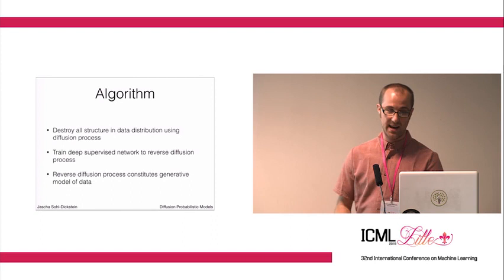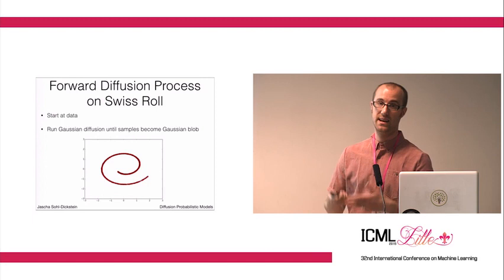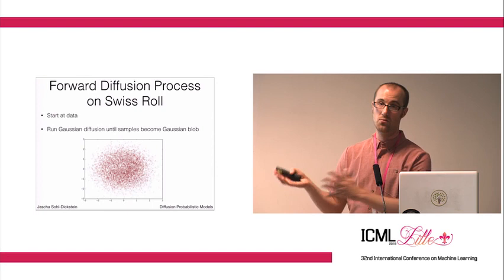Let's start with a little toy data set. The forward process is we start with some data distribution. In this case, the data lies in a Swiss roll. And we run Gaussian diffusion until we get an uninformative distribution out. In this case, we run Gaussian diffusion until we just have a Gaussian blob centered at the origin.